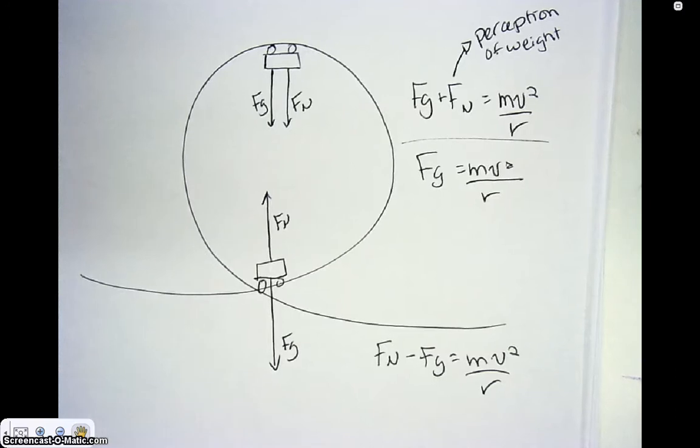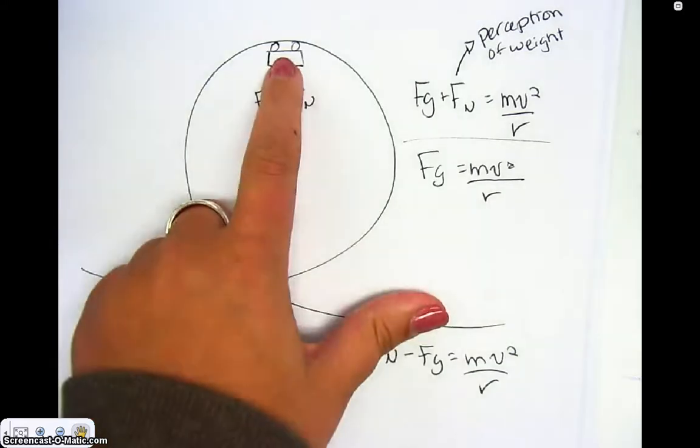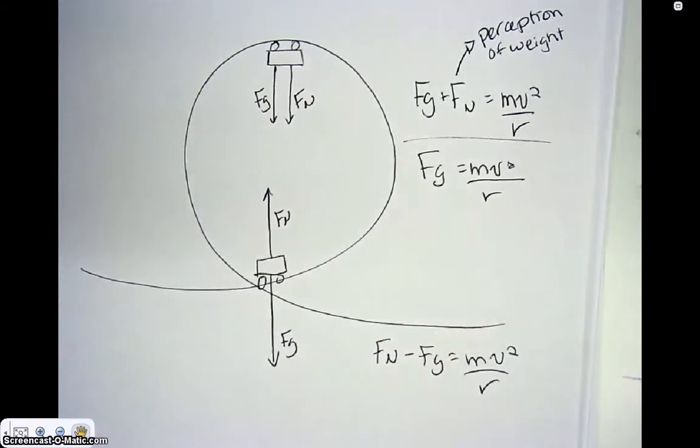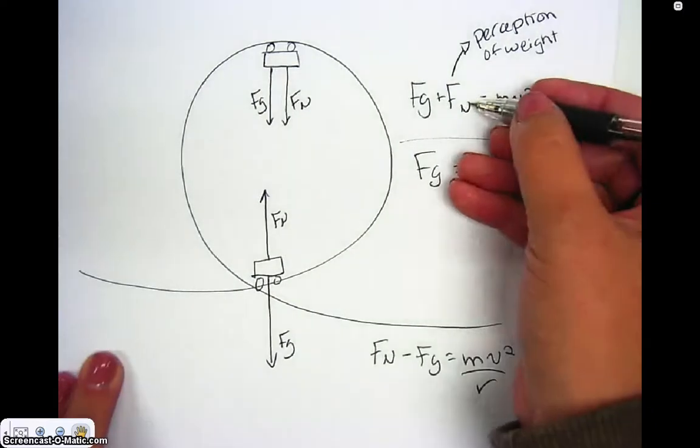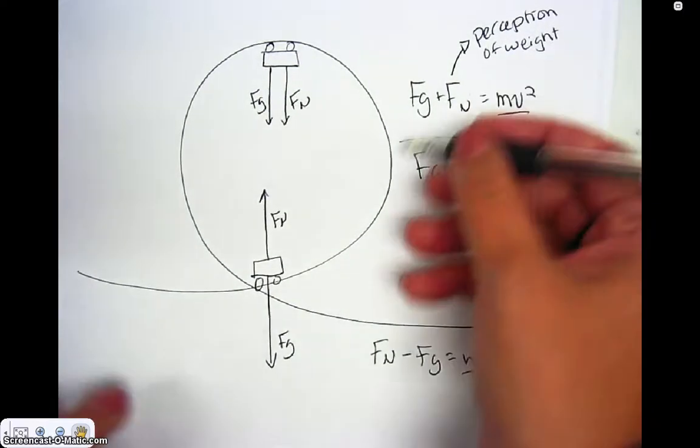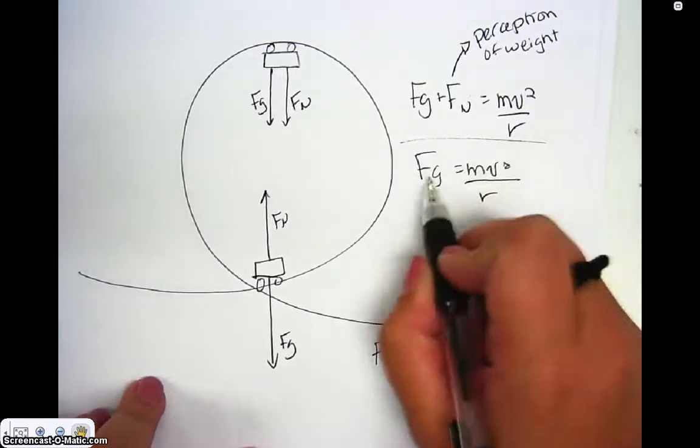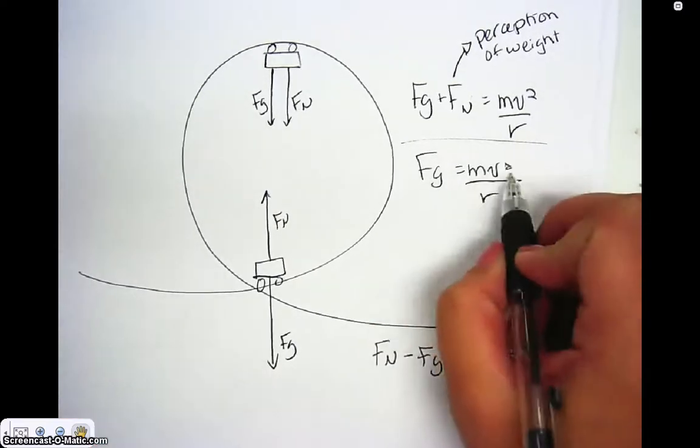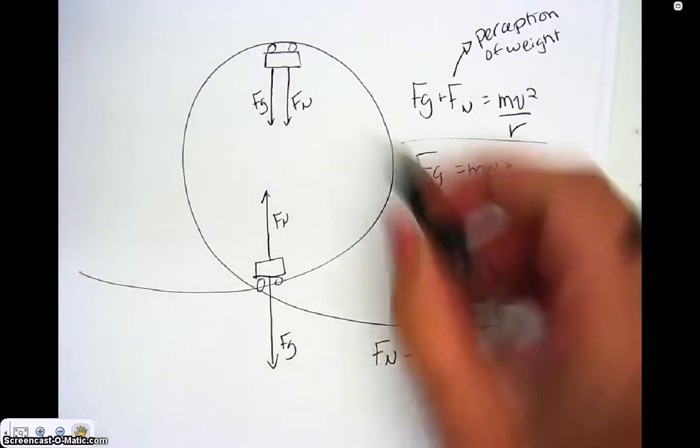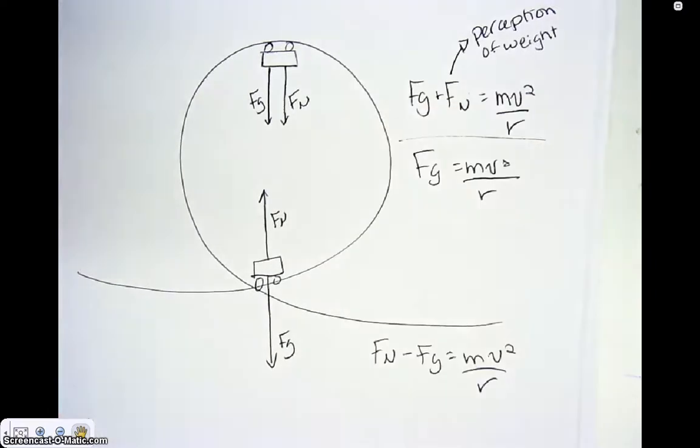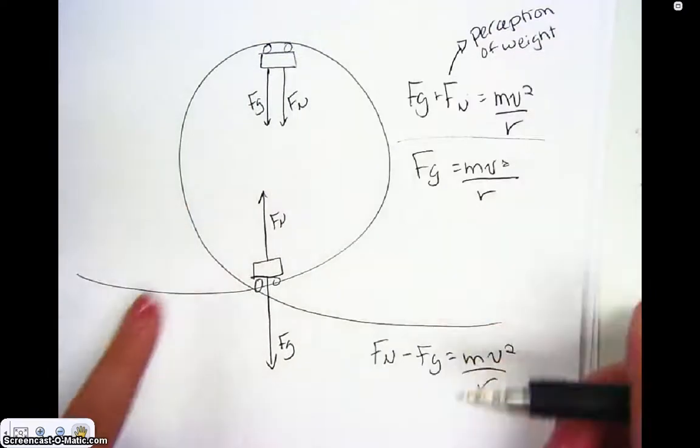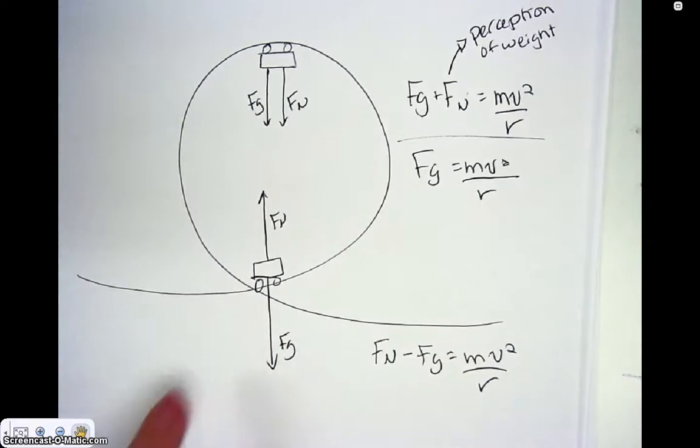What you could also be asked is, what is the minimum velocity required for that person or roller coaster to stay on the track without falling? In that case, your normal force would also be zero. You'd have this scenario and you'd be trying to find the velocity where this was equivalent. If this velocity made this lower than your weight, then you'd fall off the track. It would make you drop from the bottom.